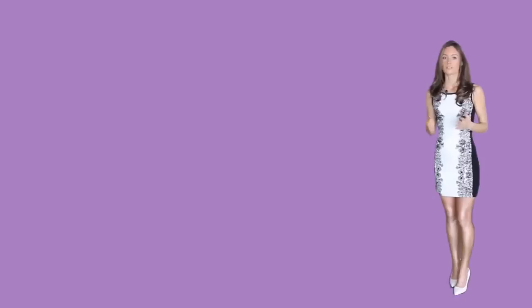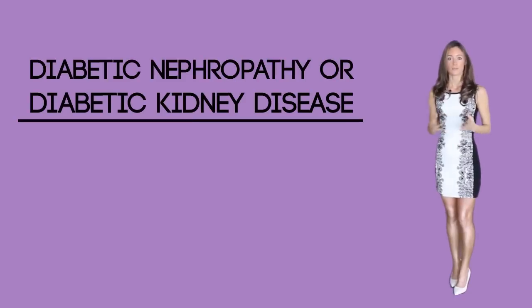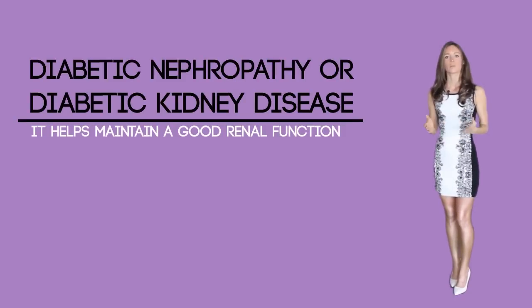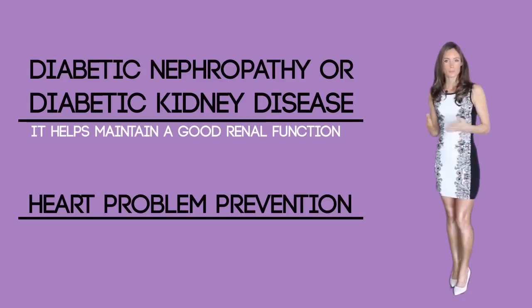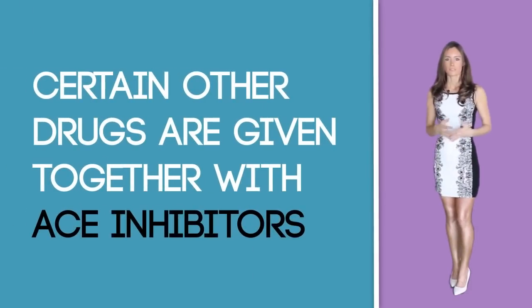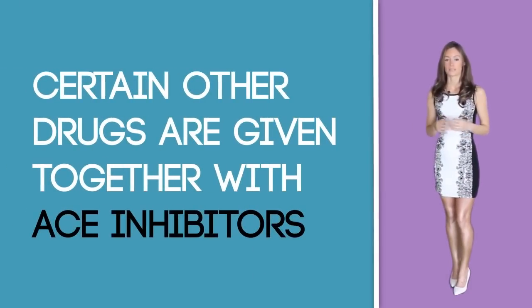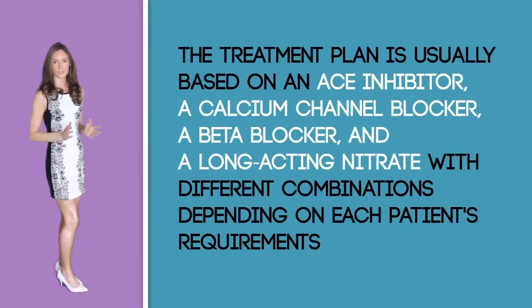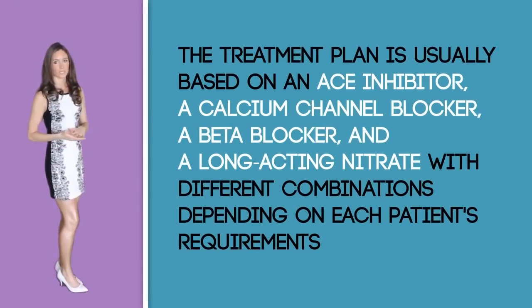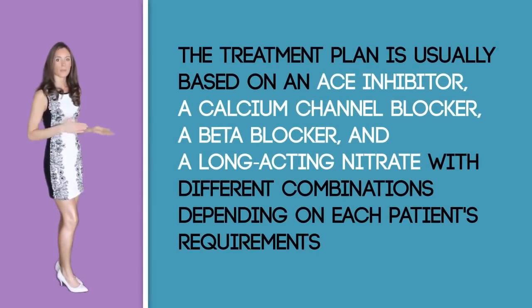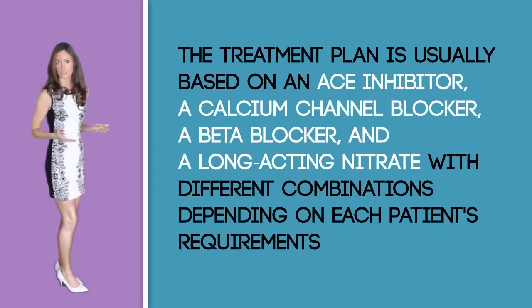ACE inhibitors are also helpful in chronic kidney disease, slowing down the development of renal disease. They are also helpful in diabetic nephropathy, or diabetic kidney disease, helping to maintain good renal function. For heart disease prevention, certain other drugs are given together with ACE inhibitors — the treatment plan is usually based on an ACE inhibitor, a calcium channel blocker, a beta blocker, and a long-acting nitrate, with different combinations depending on each patient's requirement.